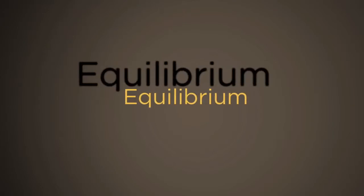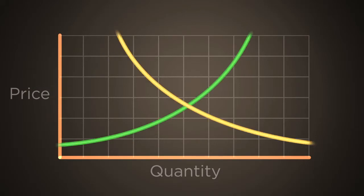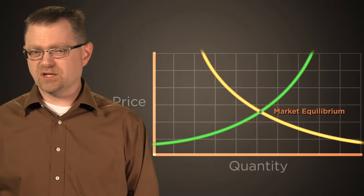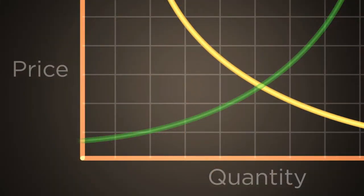So, is it supply or demand that determines the market price? The answer is both. Like the two blades of a scissors, supply and demand work together to determine price. When you combine the supply and demand curves, there is a point where they intersect. This point is called market equilibrium. The price at this intersection is the equilibrium price, and the quantity is the equilibrium quantity. At the equilibrium price, there is no shortage or surplus. The quantity of the good that buyers are willing to buy equals the quantity that sellers are willing to sell. Buyers can buy the quantity they want to buy at the market price, and sellers can sell the quantity they want to sell at the market price.